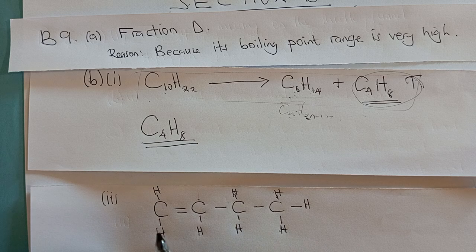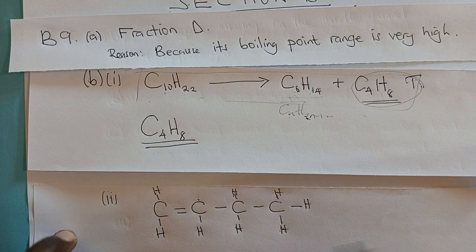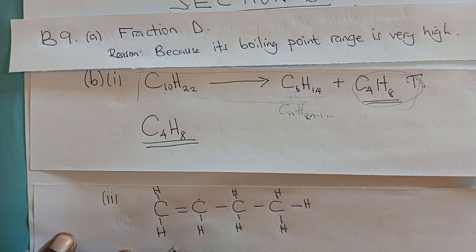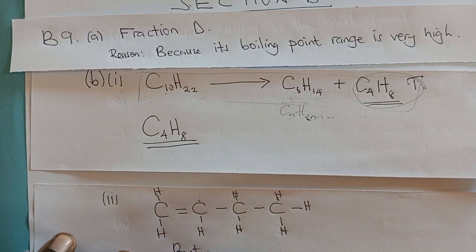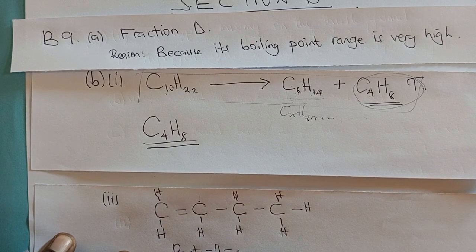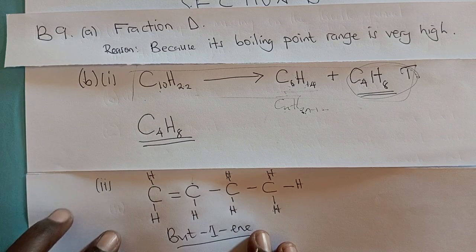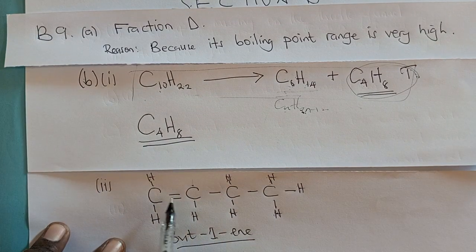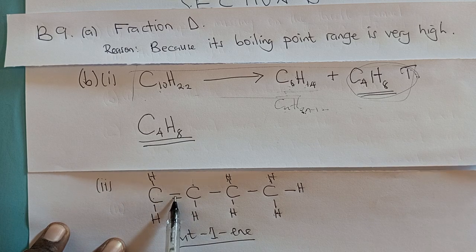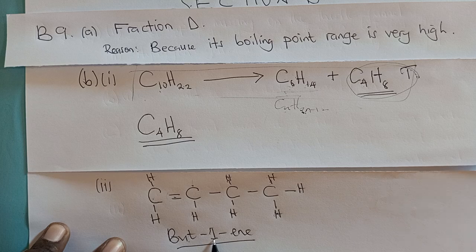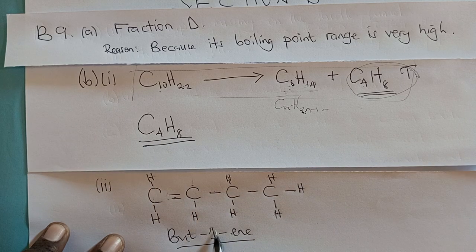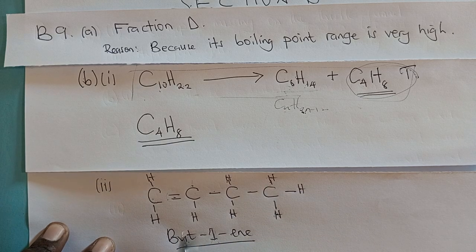This compound is butene. If we consider isomers: when the double bond is between the first and second carbon atoms, we call it but-1-ene. If the double bond is between the second and third carbon atoms, we call it but-2-ene. Any isomer of butene would be correct as a displayed structure answer.